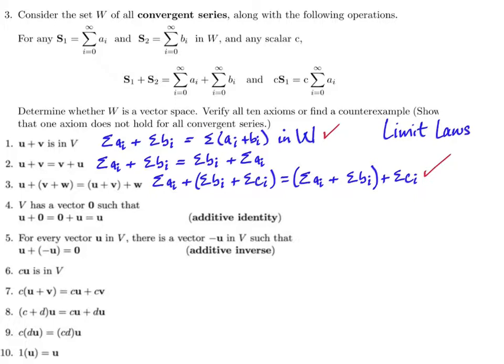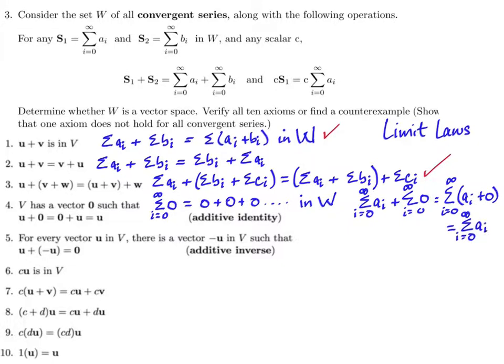Is there a zero vector in this set? So is there a convergent series that acts like the additive identity? If we add it to another convergent series, do we not change that series? Well, the sum from one to infinity of the number zero, which is zero plus zero plus zero, that is a convergent series. And so that is in our set W. And when we add it to another convergent series, remember we can add corresponding terms. And it doesn't change our series. We still get the convergent series.